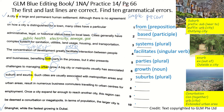Such cities are usually associated with metropolitan areas and urban areas, resulting in numerous business commuters traveling to urban cities. Here you should use the continuous form for 'result'. The continuous form adds -ING, so it becomes 'resulting'. Continuous form: R-E-S-U-L-T-I-N-G.